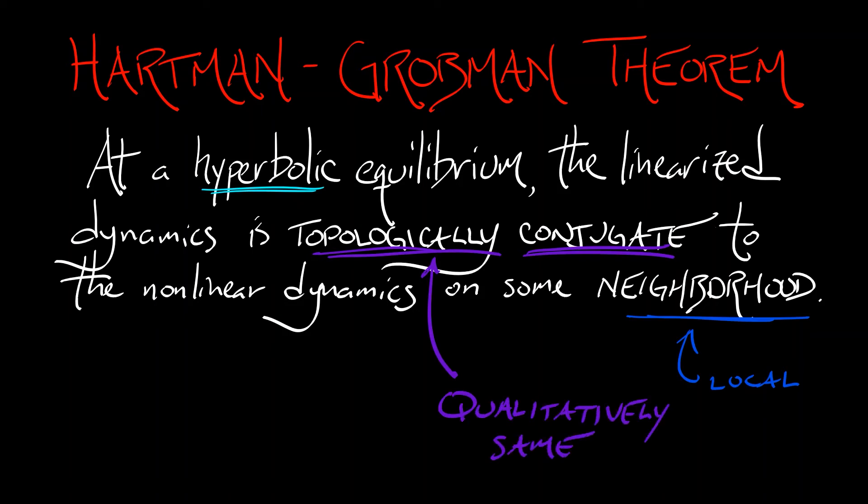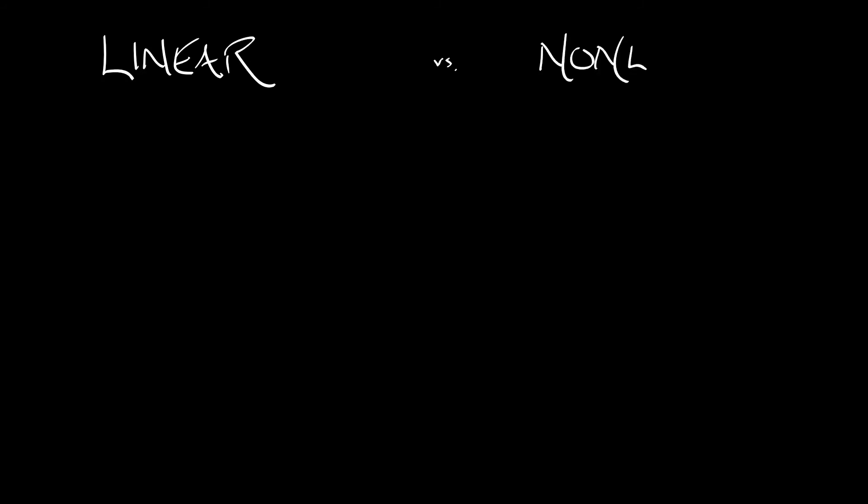If you need to see a more precise definition, go back to volume two. That's the Hartman-Grobman theorem — works just the same. Now there is a little bit more to the story if we compare the linear versus the nonlinear versions of the dynamics about an equilibrium.